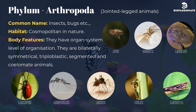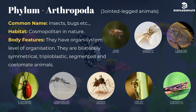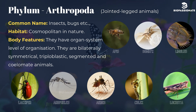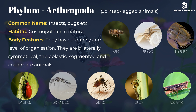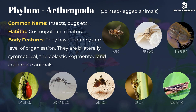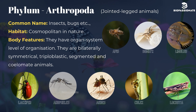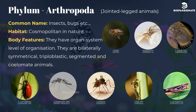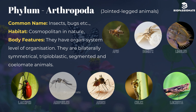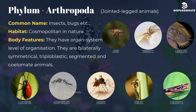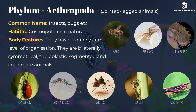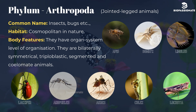Phylum Arthropoda, commonly known as insects and bugs. They have jointed appendages and are cosmopolitan in nature. They have organ system level of organization and are bilaterally symmetrical, triploblastic, segmented, and coelomate animals. Common examples are Apis (honeybee), Bombyx (silkworm), Laccifer (lac insect), Anopheles, Culex, and Aedes mosquitoes, Locusta (locust), and Limulus (king crab).